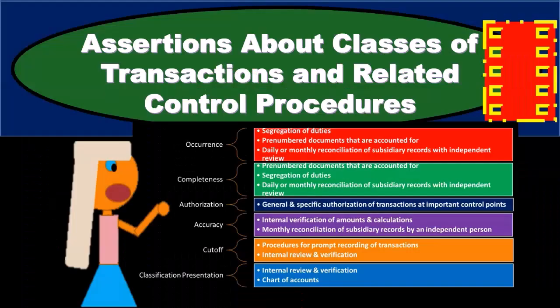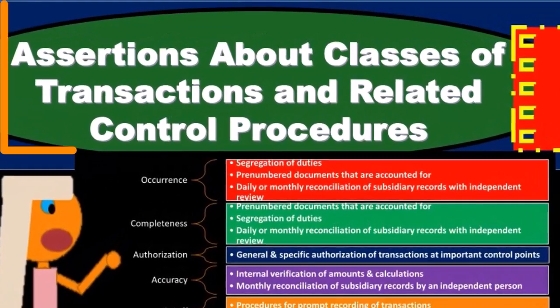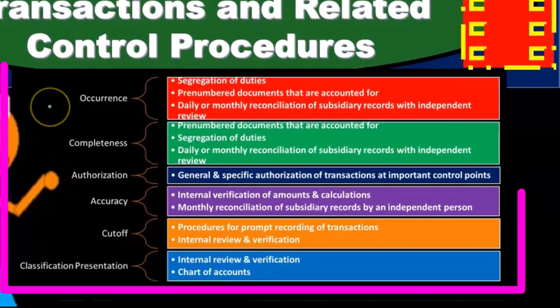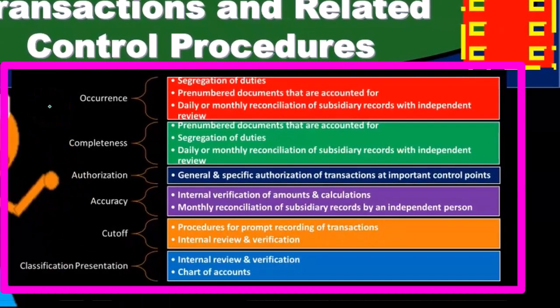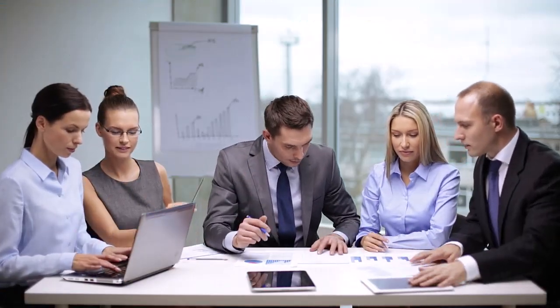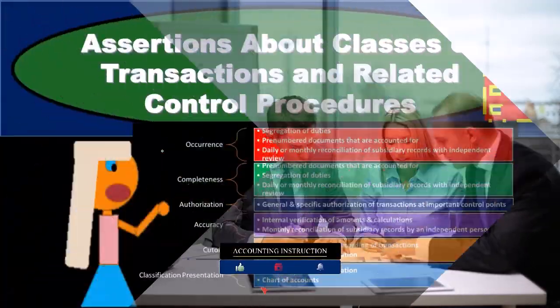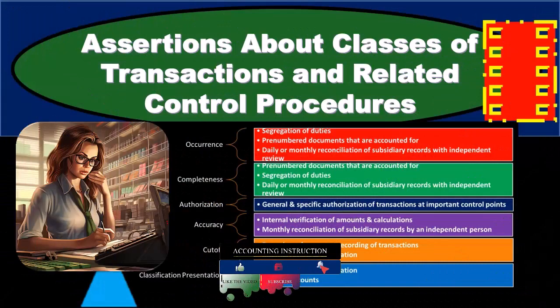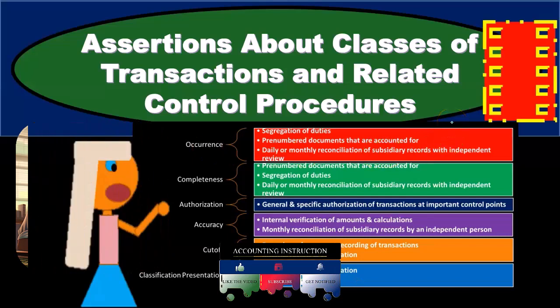In this presentation, we will take a look at assertions about classes of transactions and related control procedures. We're going to think about the assertions related to implementing internal controls — management putting together their internal controls as sets of checks and balances — and consider the assertions for which they would want to put controls in place, and then the type of control activities that would relate to those assertions.